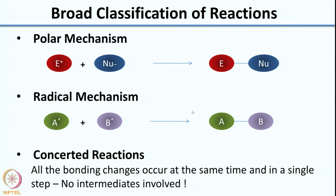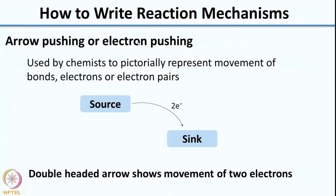I have shown you examples from chemistry and biology where people have used these experiments to confirm the most probable mechanism. Initially in week 1, we started with a broad classification of reactions. We classified them as reactions with a polar mechanism — where you have charged intermediates or intermediates with partial charge — with electrophilic and nucleophilic species coming together to form a new bond.